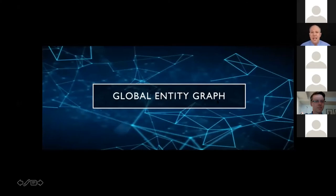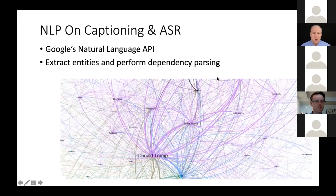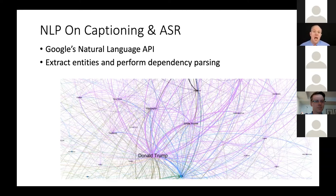One key area we do a lot of work in is something called the Global Entity Graph. We take all that closed captioning and analyze it using Google's Natural Language API — extracting out all the entities that are referenced and performing things like dependency parsing, so we actually start building very complex graphs of what's being discussed in the news media. The entity resolution includes co-reference. There's a famous exchange we looked at: two U.S. senators debating on CNN, addressing each other as 'Senator,' and the system was actually able to follow who was speaking purely from the flow of dialogue in the closed captioning.